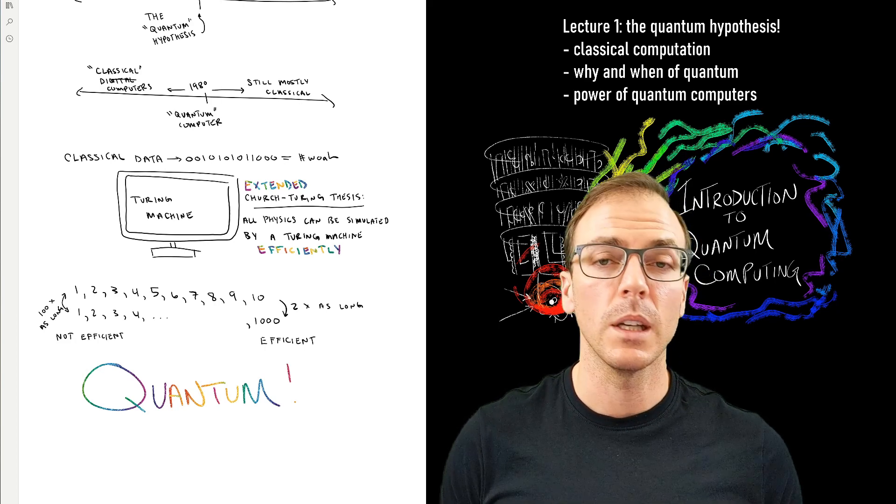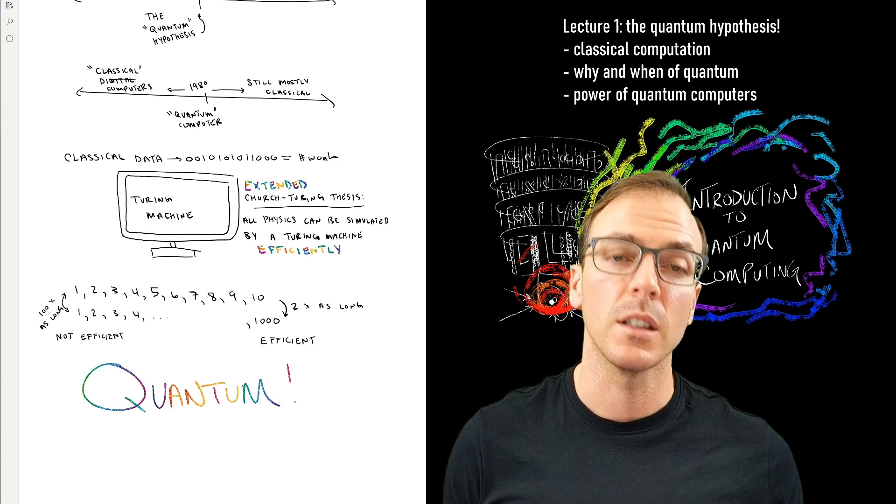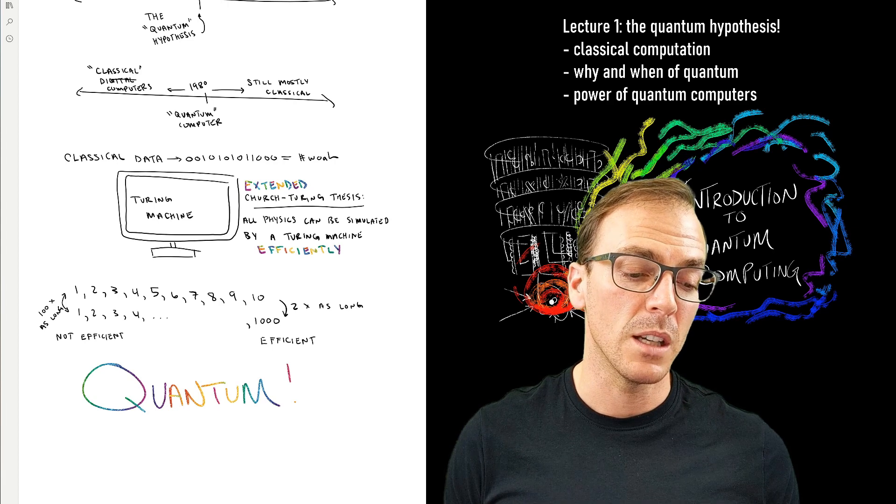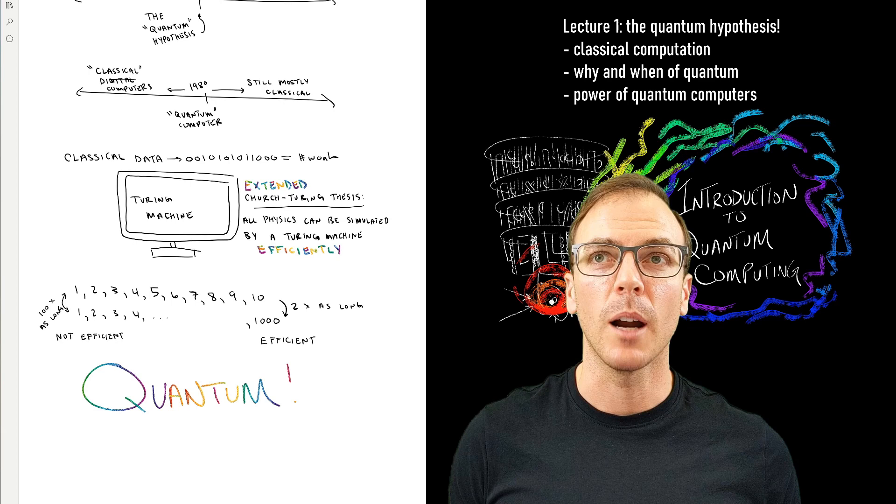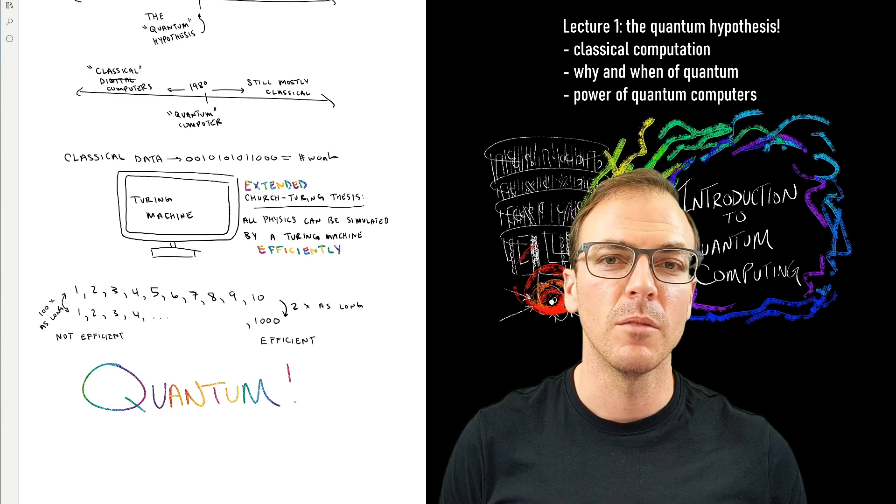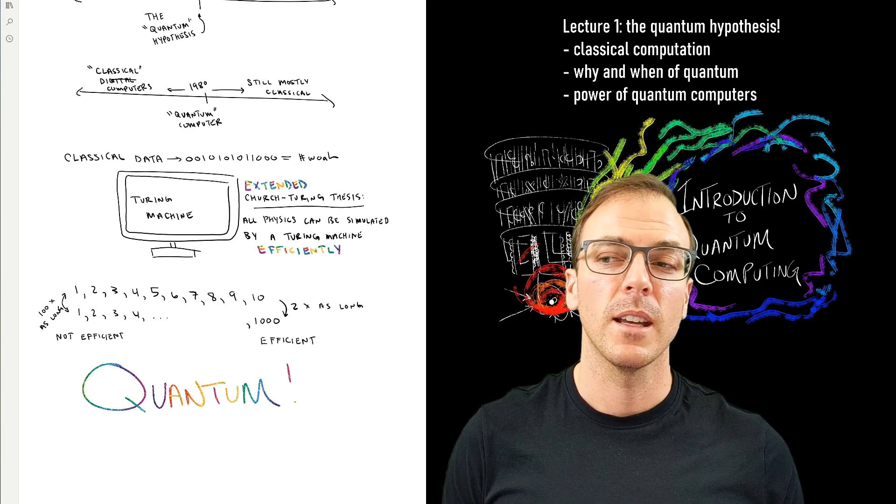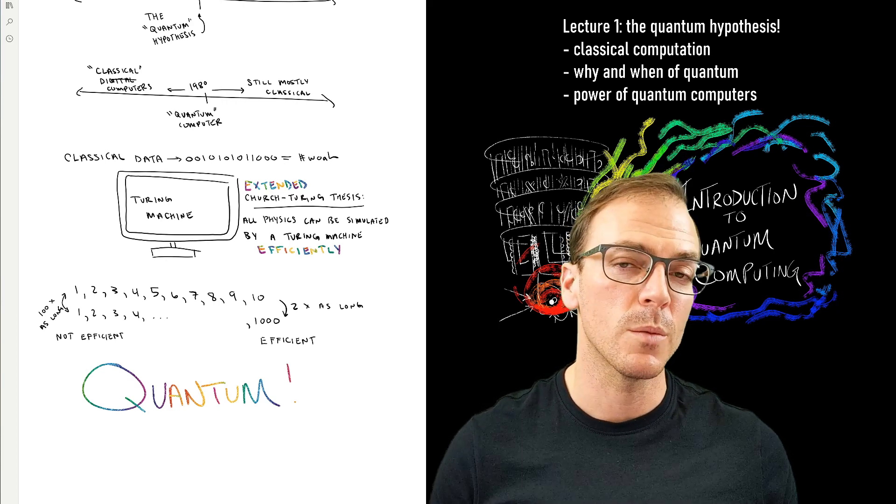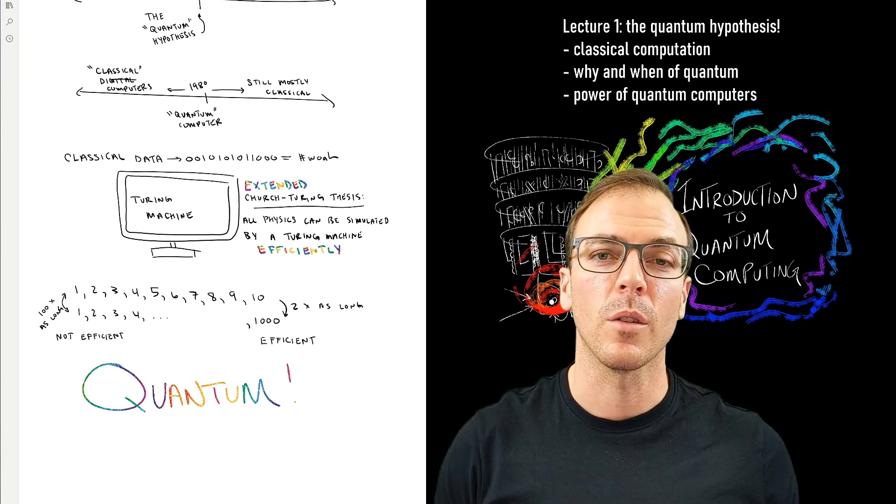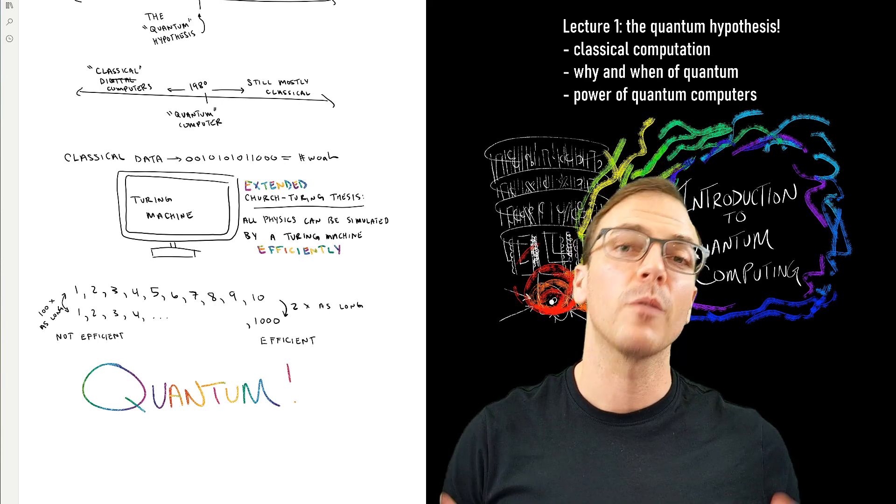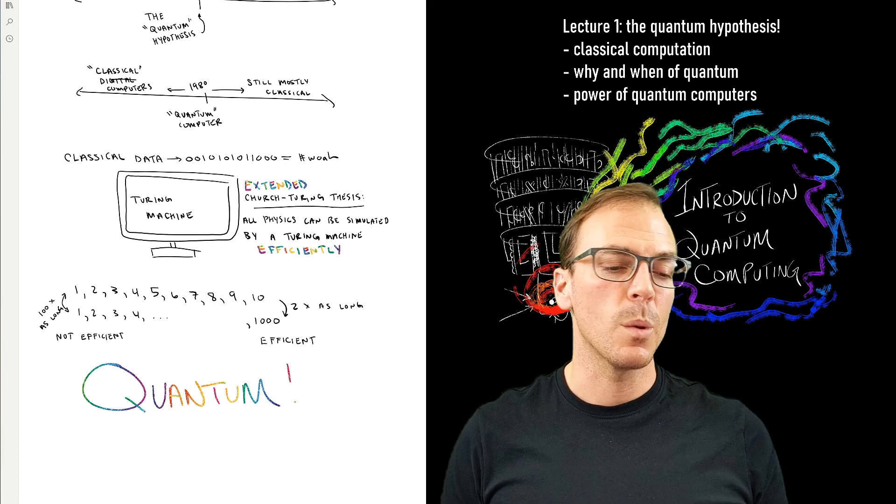In fact, maybe with all of the computing power that we have in the world today, we might be able to get up to, you know, a very small molecule that we want to simulate. And if we add just one more small degree of freedom, then we need two Earths worth of computers. And another one would require four Earths. And that would grow exponentially. So around 1980, people started to think about this problem.